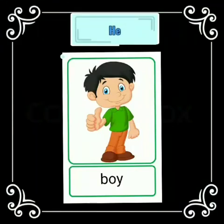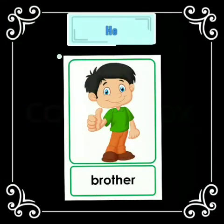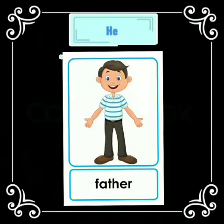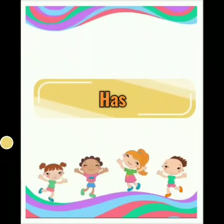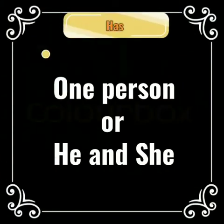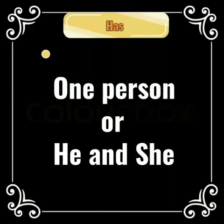He — when we talk about a boy or a man, we use he. Like your brother — brother is a boy, so we use he for brother. Father is a man, so we use he for father. Has is used for one person; we use has with he and she.